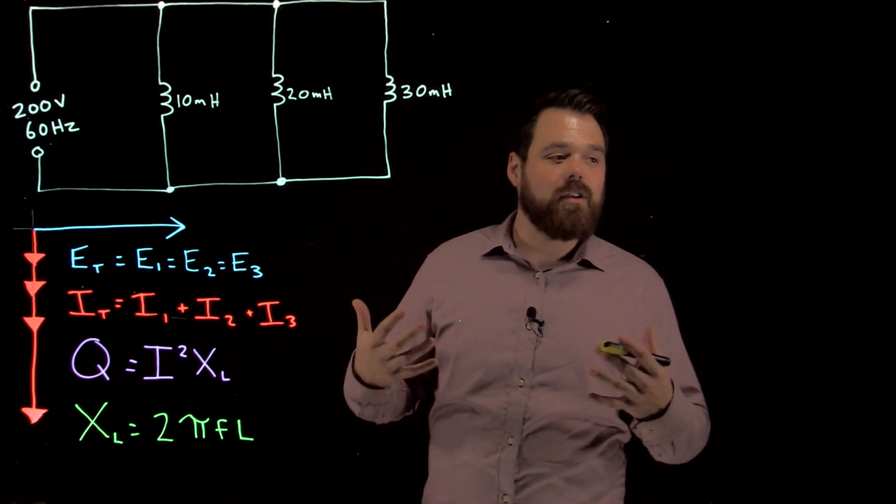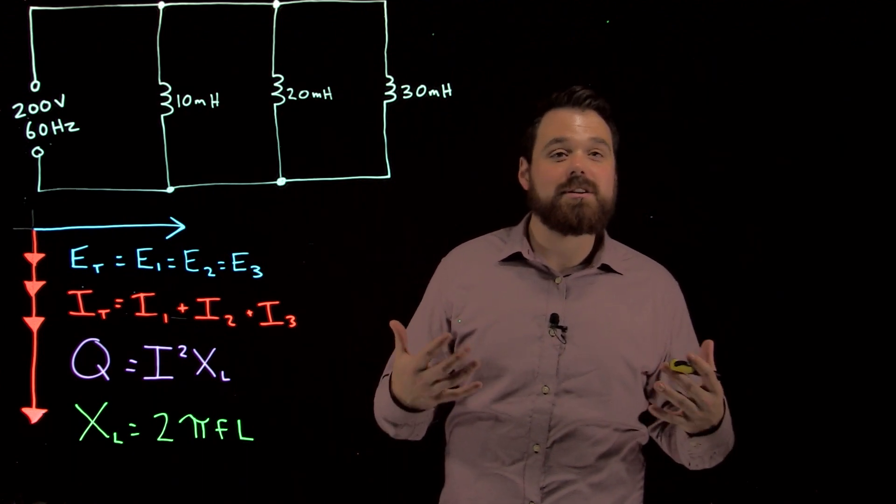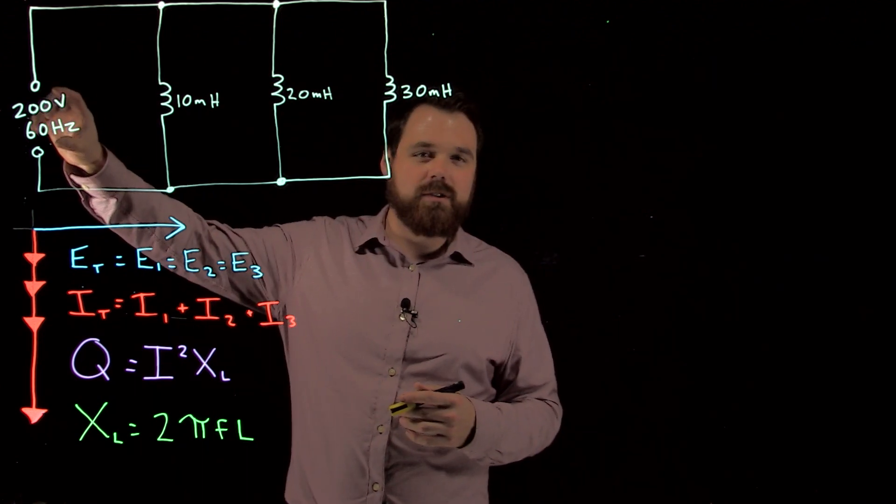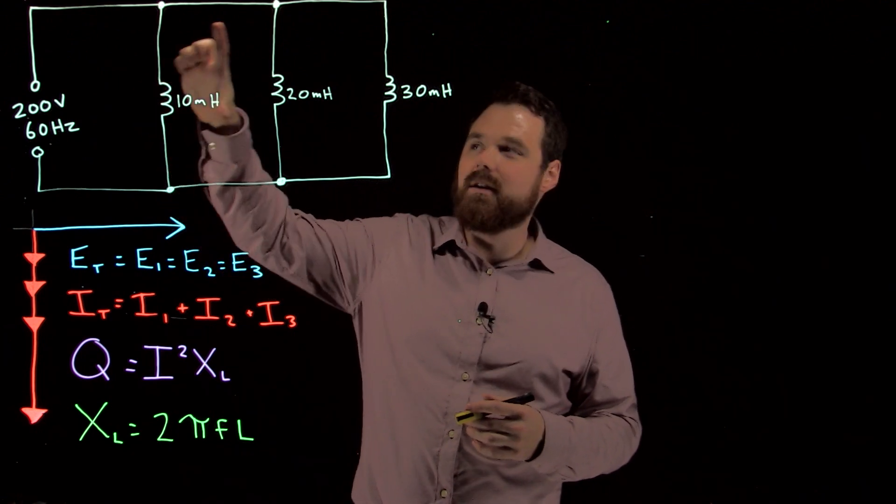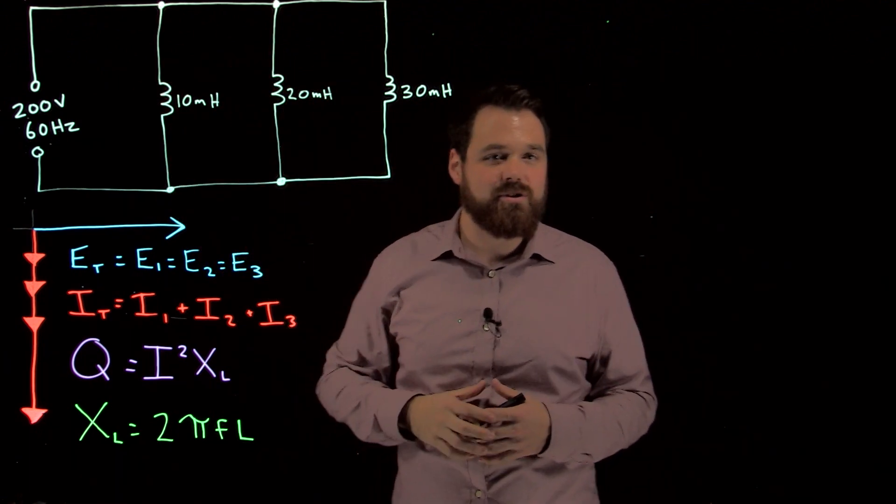What we see is our basic parallel rules still apply. The source voltage is going to be the same across branch 1 as across branch 2 as across branch 3.